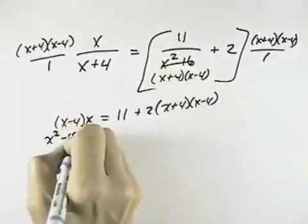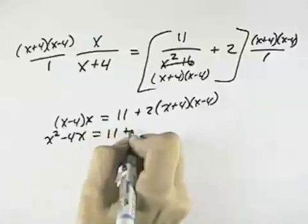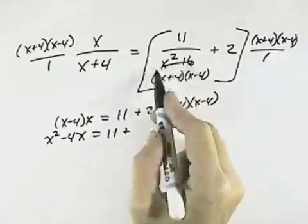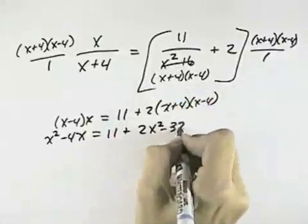So on the left, I have x squared minus 4x. And on the right, I have 11 plus, well, this is x squared minus 16 if I multiply it back out again. So multiplying by 2, I get 2x squared minus 32.